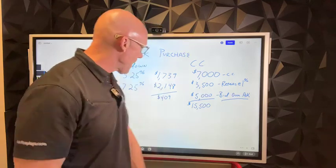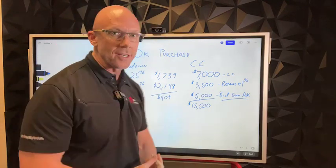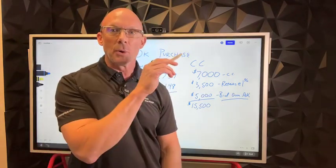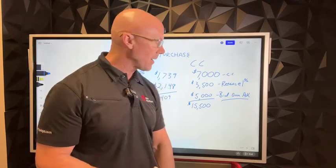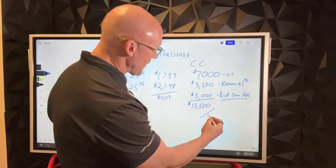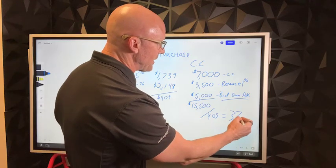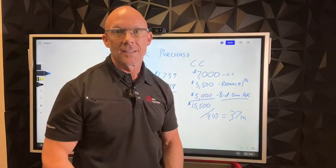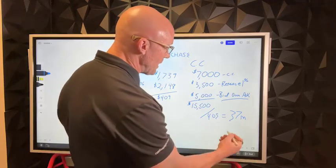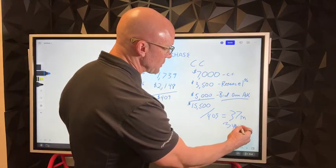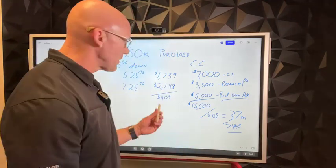Now if I have an extra $15,000 in my bank account and my payment is $409 higher, and I just pull from that bank account for a little while, this divided by 409 is roughly 37 months. That's three years that you're able to get through this $400 payment.